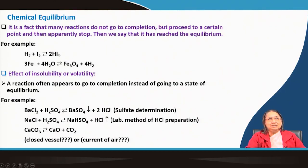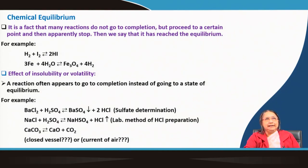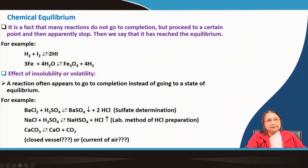At equilibrium, the composition — some hydroiodic acid, iodine, and hydrogen — depends on the conditions. The rate of the forward reaction equals the rate of the backward reaction. The HI produced from hydrogen and iodine is decomposed at the same rate back to reactants — that is the equilibrium state. Similarly, iron reacting with steam produces hydrogen gas and iron oxide Fe₃O₄, which is also a reversible equilibrium reaction.